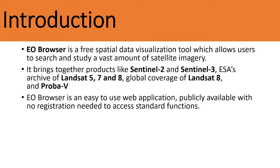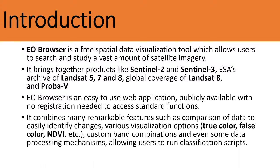EO Browser is an easy-to-use web application, publicly available with no registration needed to access the standard functions. It combines remarkable features such as comparison of data to easily identify changes, various visualizations such as true color, false color, or NDVI, as well as custom band combinations and data processing mechanisms that allow users to run classification scripts.